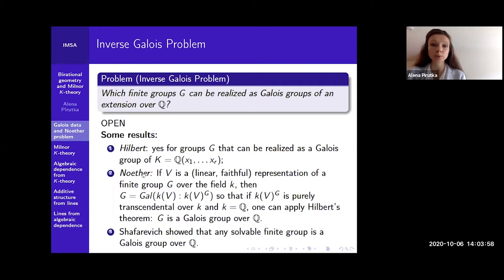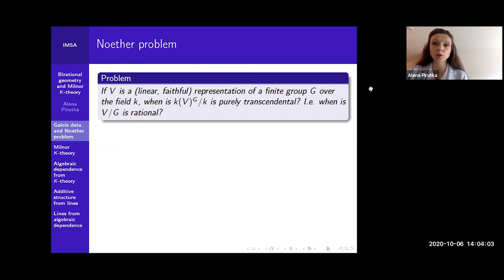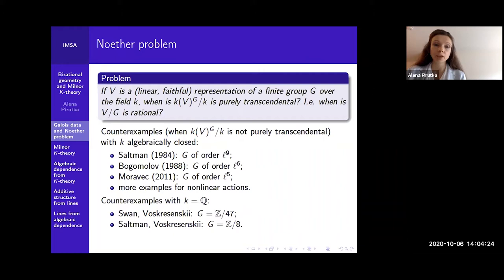This gives a natural connection with questions on the rationality of the quotient V mod G, or the question to know whether this field is purely transcendental over Q. Also in general, we have a theorem of Schaefer-Revich who showed that any solvable finite group is a Galois group over Q. So let's talk about the Noether problem in more details. The question is to know if V is a linear faithful representation of a finite group G over the field K, whether the field of invariants is a purely transcendental extension of K.